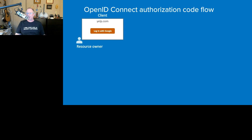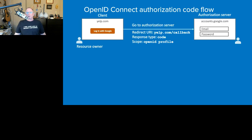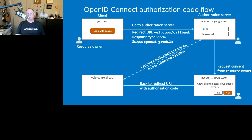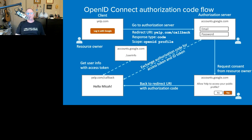Revisiting the authorization code flow in the context of OpenID Connect: all the same flows are available since OIDC rides on top of OAuth. The flow kicks off similarly, except now we have a required scope — the 'openid' scope — that distinguishes this from a regular OAuth interaction. We see the consent screen, redirect back with an authorization code, and here's where things differ: when Yelp exchanges the code it gets back both an access token and an ID token. Yelp can now identify me by name because the ID token has my user identifying information, and it can use the access token to interact with the UserInfo endpoint for additional information.